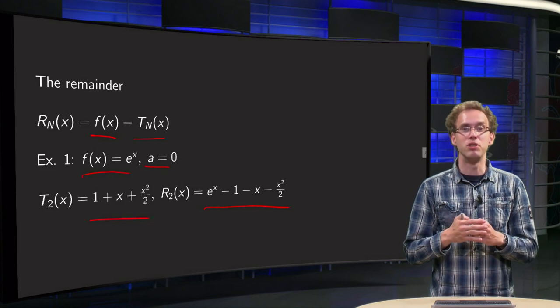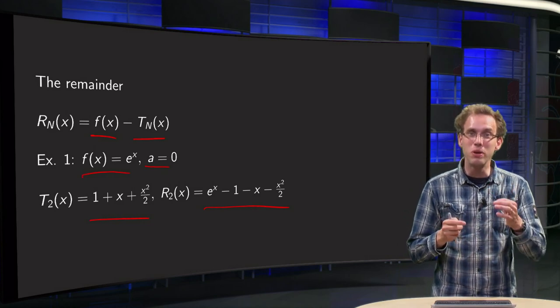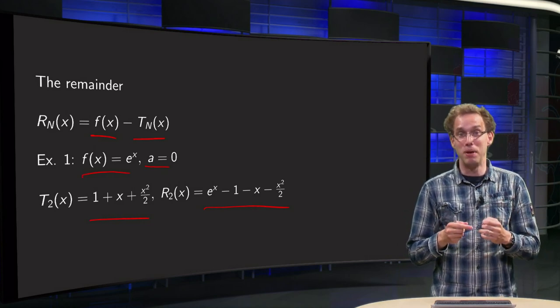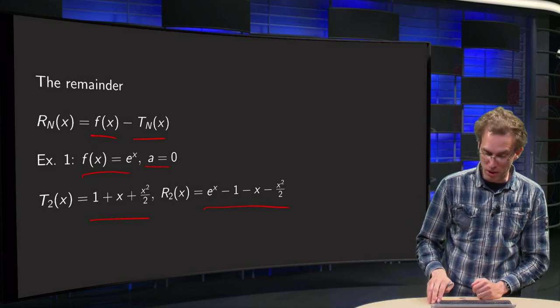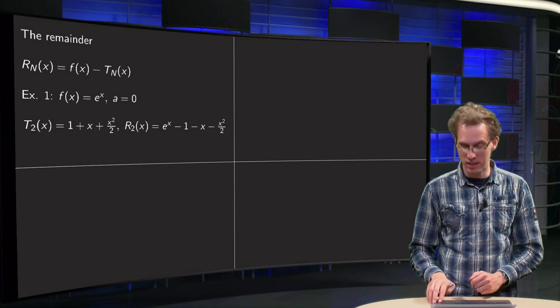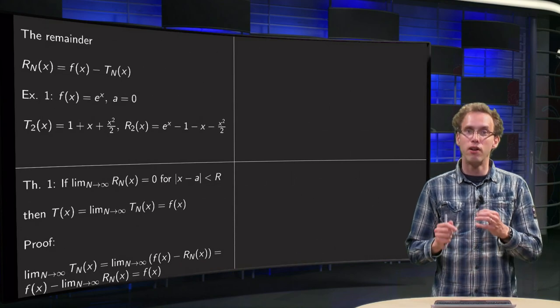Now, you are never going to compute those remainders. What we are going to do is to estimate how big they are and try to show that they go to 0 if n goes to infinity. That's the idea of those remainders.